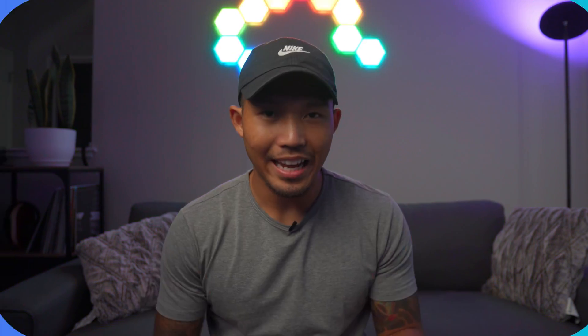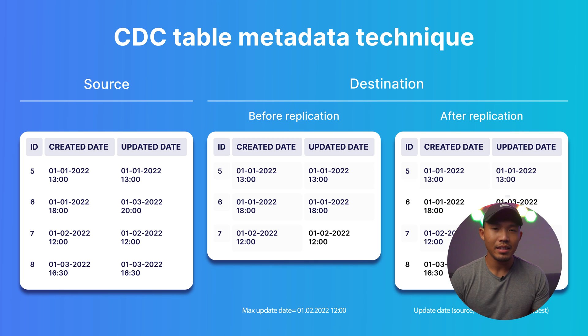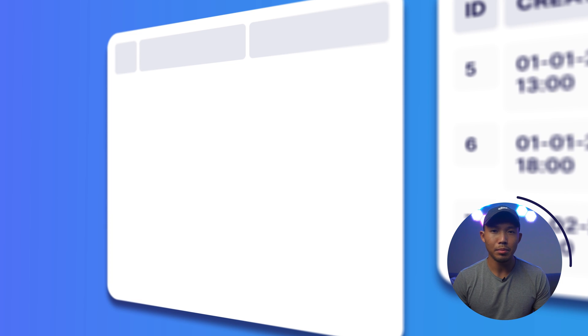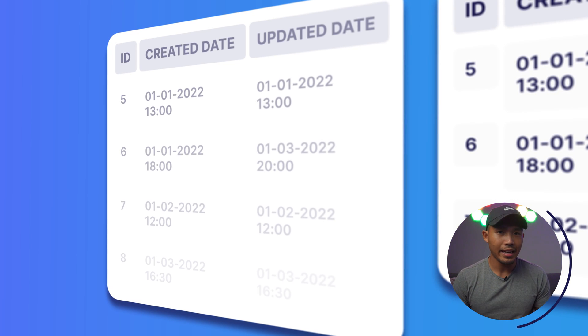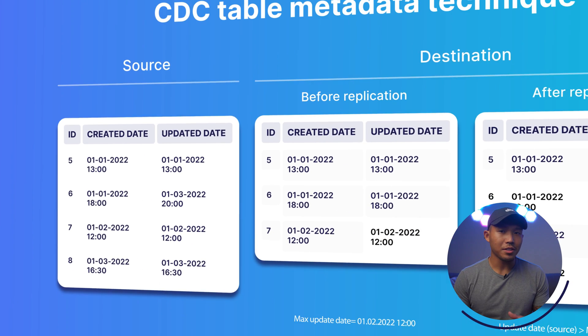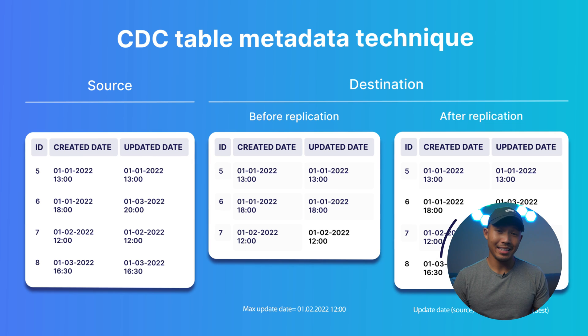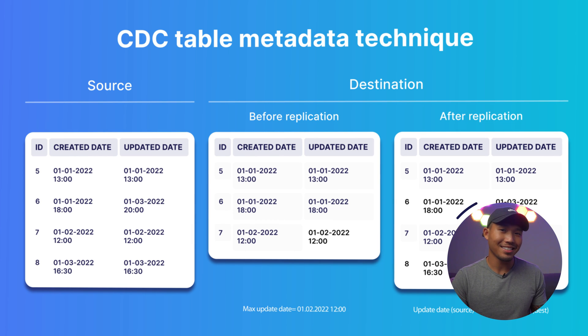CDC actually has a couple of other methods you may not have known about. The first is called table metadata. This method tracks every single row in a table, including when the row was created and updated. To use this method, you usually have to create additional columns such as created_at and updated_at, or a separate table to track these metadata elements. Tracking metadata is typically used in incremental batch processing to identify new and updated rows.